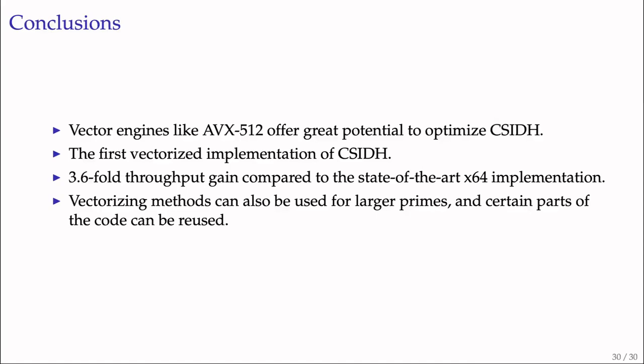In this work, we showed that vector engines like AVX-512 offer great potential to optimize CSIDH. We presented the first vectorized implementation of CSIDH, and by developing efficient batching methods for the class group action and combining them with highly optimized field arithmetic, we achieved a 3.6-fold gain in throughput compared to state-of-the-art x64 implementation. The correct parameterization of CSIDH to achieve NIST security level 1 is currently still a topic of debate, but our proposed vectorizing methods can also be used for larger primes, and certain parts of our source code can be reused. That's it. Thank you for your attention.